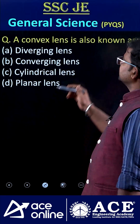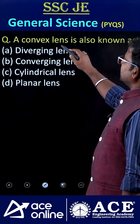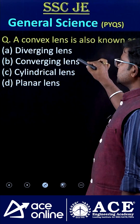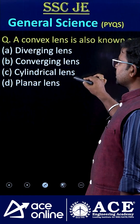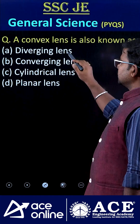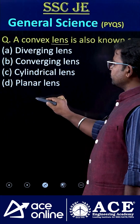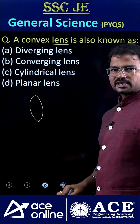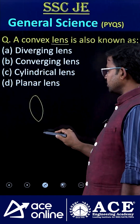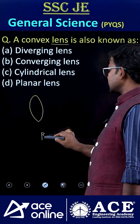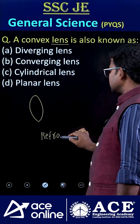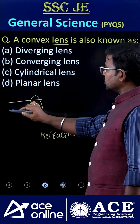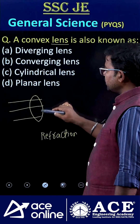Welcome to Ace Online. A convex lens is also known as a converging lens. If you consider a convex lens, it looks like this. The name of the phenomenon here is refraction. When light is passed through this convex lens, refraction occurs.